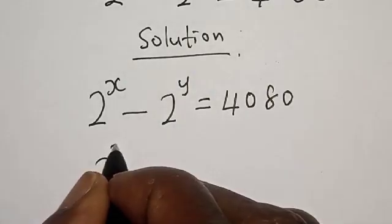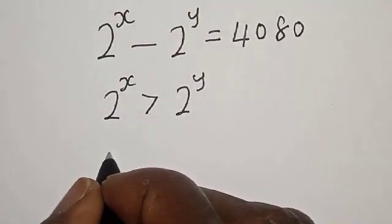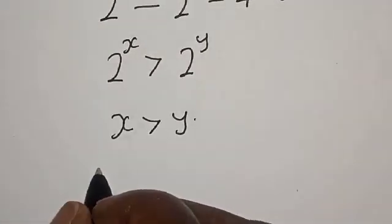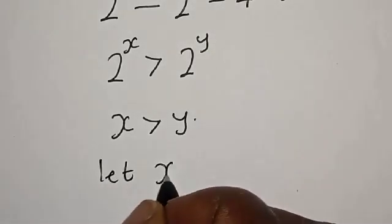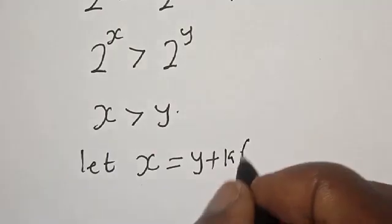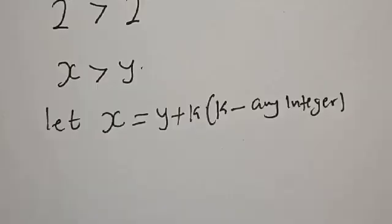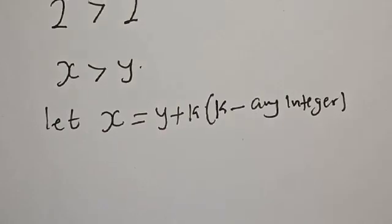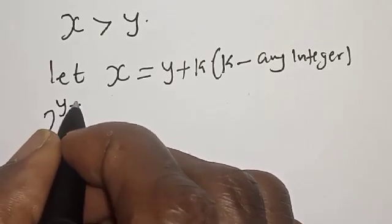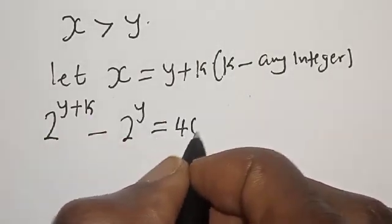Note that 2 raised to power x is greater than 2 raised to power y, which means x is greater than y. In this case, we let x equal to y plus k, for k being any integer. That is, anywhere you see x, you put y plus k there. Then we have 2 raised to power y plus k minus 2 raised to power y is equal to 4080.